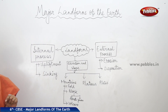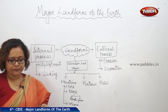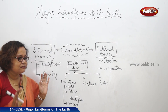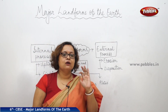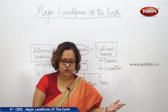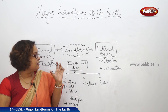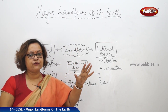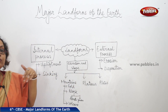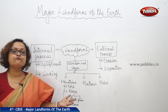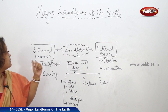The chapter we are discussing now is 'Major Landforms of the Earth.' We know that the landforms we see now are not always the same — they keep on changing. The different types of landforms we can see are not equal everywhere; wherever we go, we can see a different type of landform. These are the result of majorly two processes: internal process and external process.